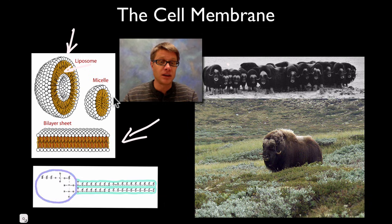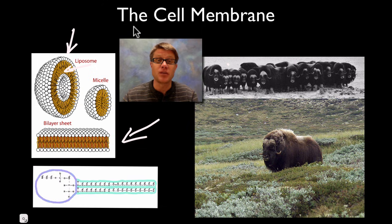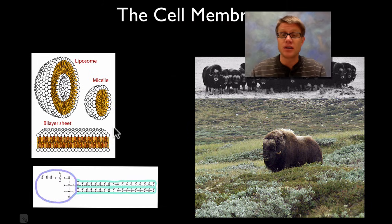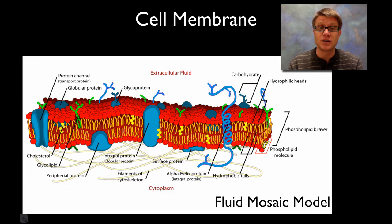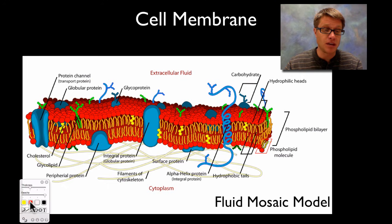This would be a single layer of phospholipids; this would be a bilayer right here. Basically all cells, period, all the cells that we have have a cell membrane, and all of those cell membranes do the same thing — they regulate what comes into and out of the cell. Now the model we use to explain how a cell membrane works is the fluid mosaic model.